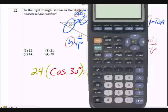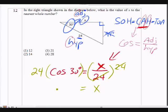It will give me the answer: 20.78, which is approximately 21. So 20.78, approximately 21, choice 3. There you go. Thank you.